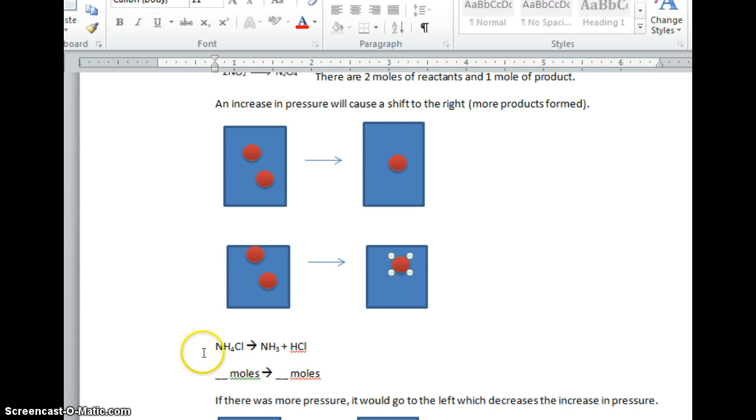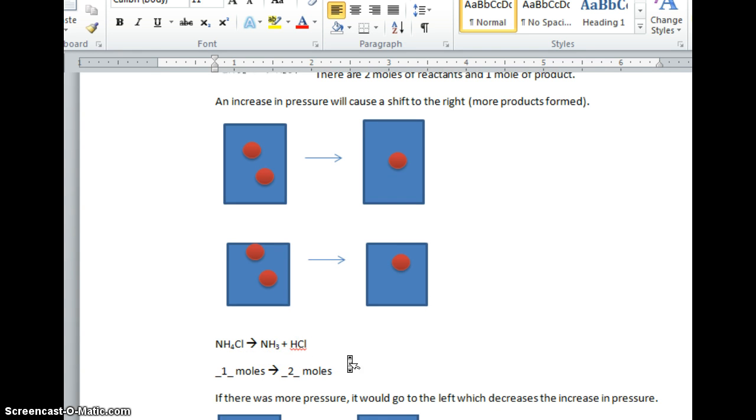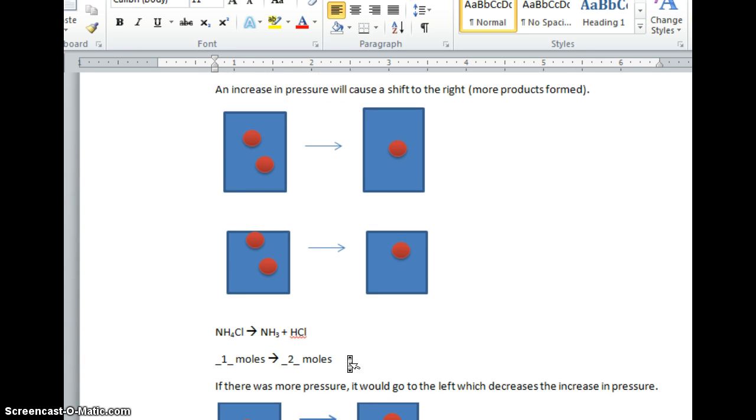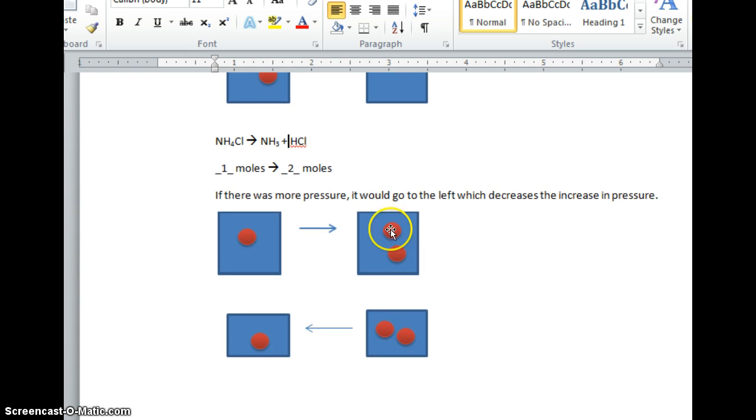And so now let's look at another one. What if I have NH4Cl and it yields NH3 plus HCl? How many moles are on the left-hand side? 1. How many moles are on the right-hand side? 2. Because I have 1 plus 1. So now if there's more pressure, it would go to the left, which decreases the sudden increase in pressure. So here I have my containers. On the right-hand side, this time I have 2 moles. I made it smaller. And so now I'm going to produce more of the reactants because there's only 1 mole of the reactants.